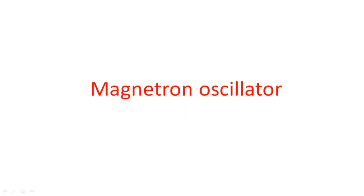In this video I am going to explain the magnetron oscillator. The magnetron oscillator is a type of magnetic type tube. In the classification of microwave tubes, there are two types: O-type tubes, also known as ordinary or linear wave tubes, and M-type tubes, also known as cross field tubes, where M stands for magnetic type. The entire working of this oscillator is based on the magnet.